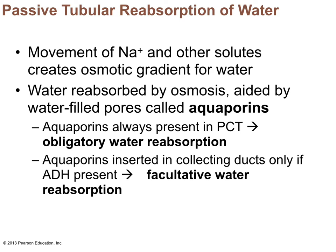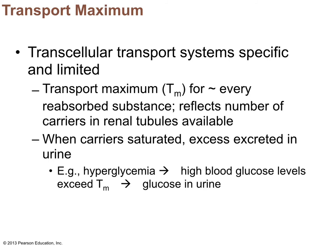For each reabsorbed substance, we have a finite number of carrier proteins. If those carriers become saturated, we hit the transport maximum and can no longer bring that substance back into the blood. For example, if there's too much glucose in the tubules — as in hyperglycemia — we saturate the glucose transporters, and excess glucose remains in the tubules and ends up in the urine.